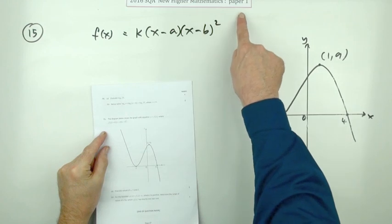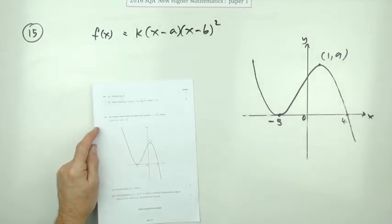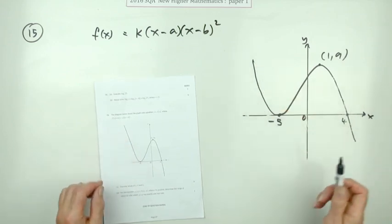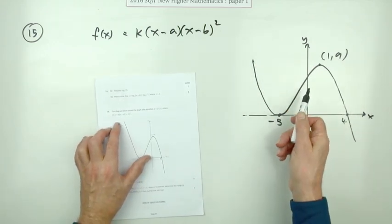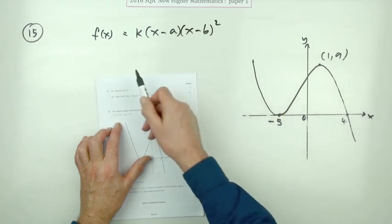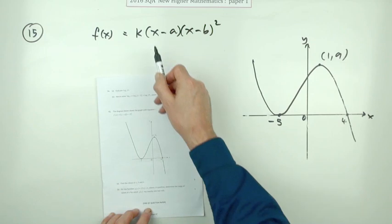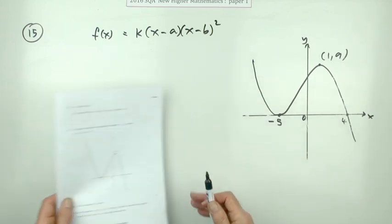Question 15, the last question in paper one of the 2016 higher maths. There's a cubic graph drawn here, and the graph of the function has this equation. What are the values for three marks of a, b, and k? So it's just one mark each.